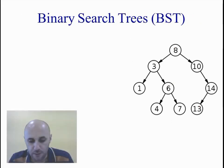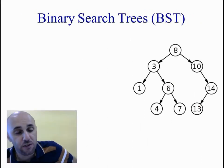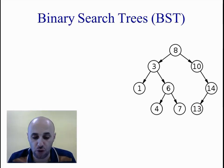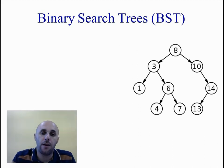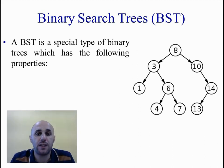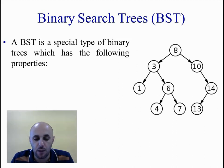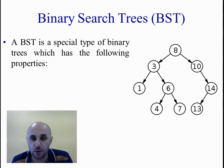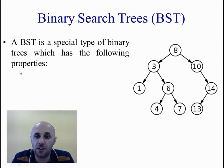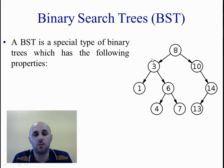We want to discuss a special type of binary trees called binary search trees, or BSTs for short. A binary search tree is like a normal binary tree but with some conditions on the values of the nodes — or what we call the node keys. These values contained inside each node have some conditions.